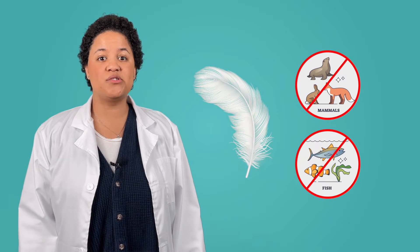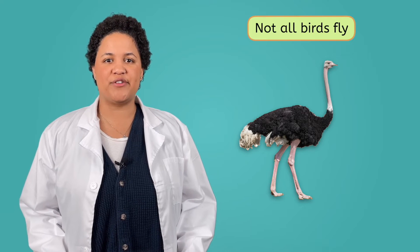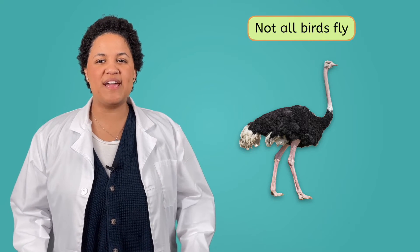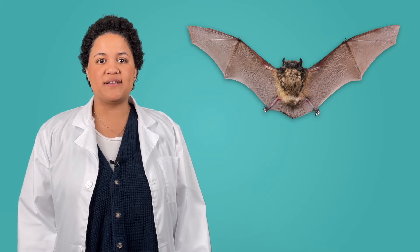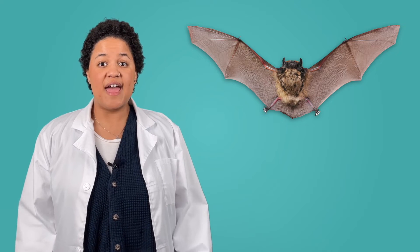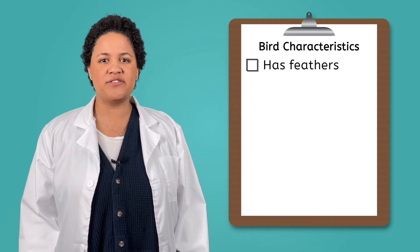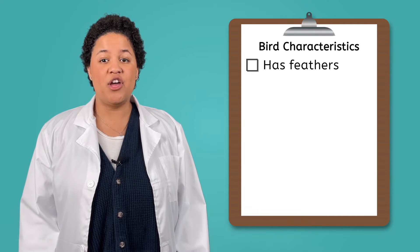Fish and mammals don't have feathers because feathers are a characteristic that is only found in birds. But we shouldn't get feathers confused with flying. All birds have feathers, but not all birds fly. For example, ostriches are covered with giant feathers but their wings aren't strong enough to lift their big heavy bodies off the ground. Feathers aren't on every animal with wings either — bats have wings and are able to fly, but their wings don't have any feathers and their bodies are covered in fur. In fact, bats aren't birds; they're actually mammals. So just because an animal has wings or can fly doesn't automatically make it a bird — you have to look for feathers.